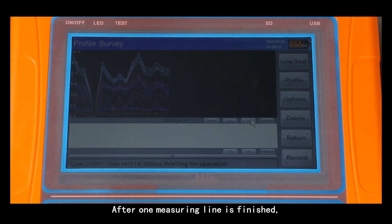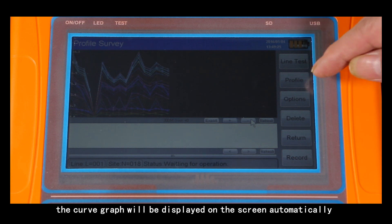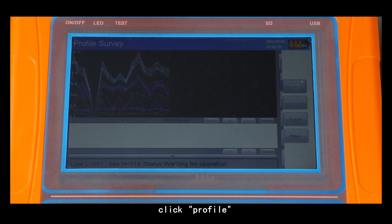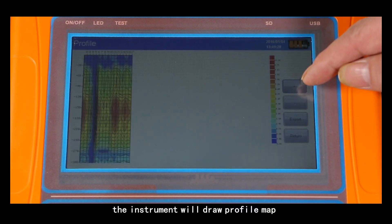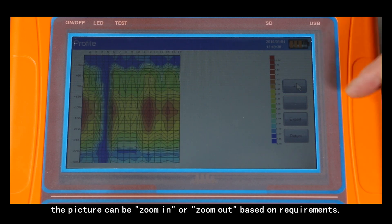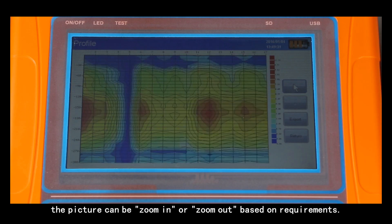After one measuring line is finished, the curve graph will be displayed on the screen automatically. Click profile. The instrument will draw profile map automatically and click plus or minus. The picture can be zoomed in or zoomed out based on requirements.